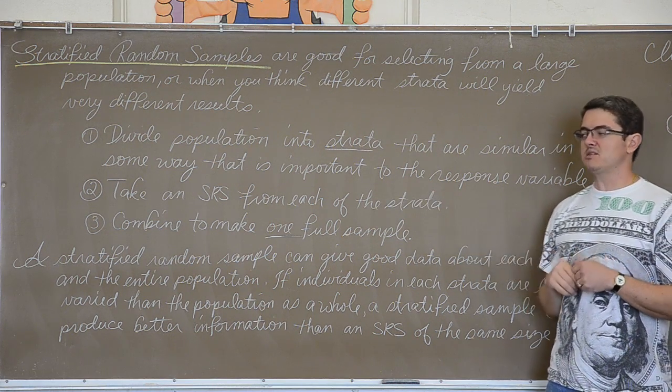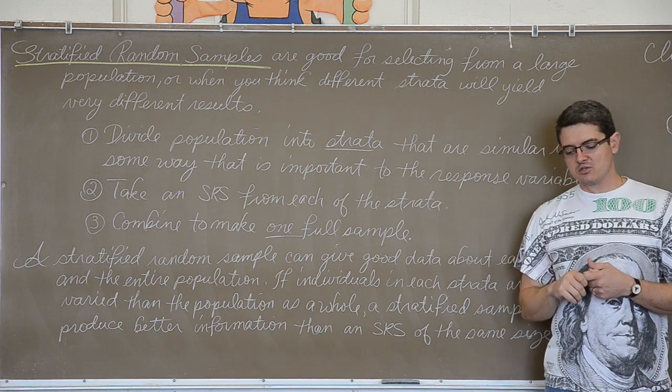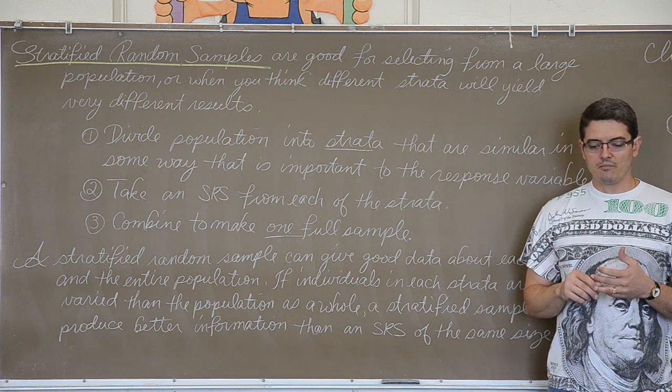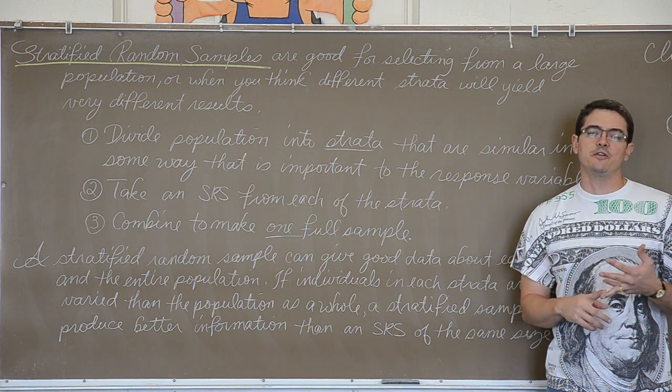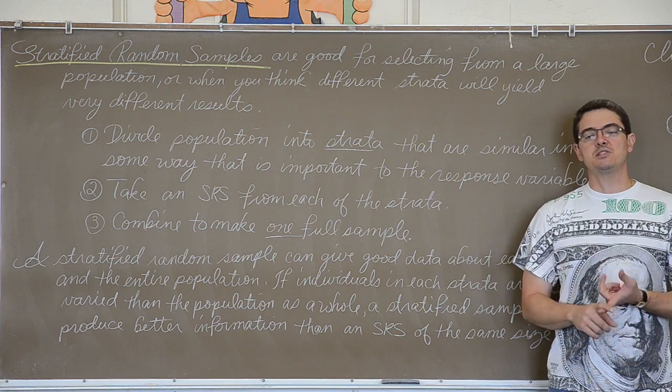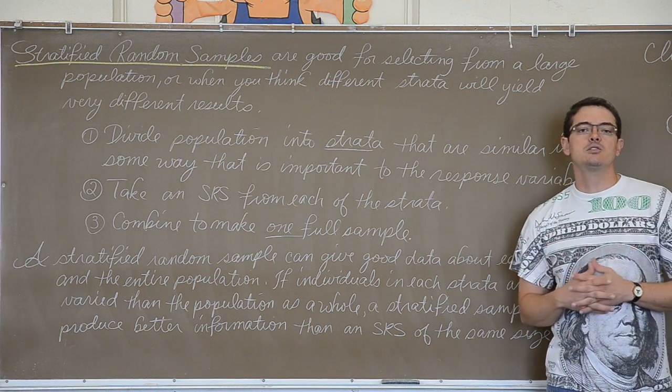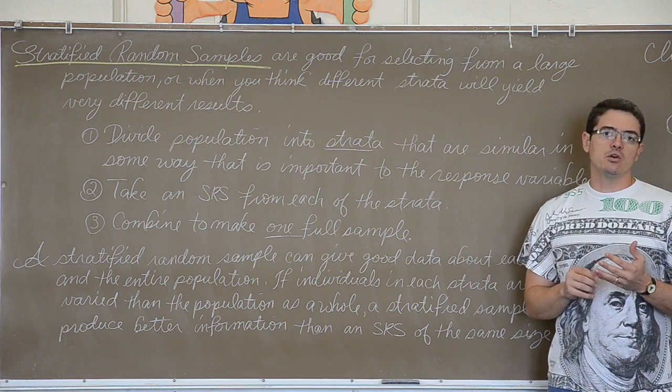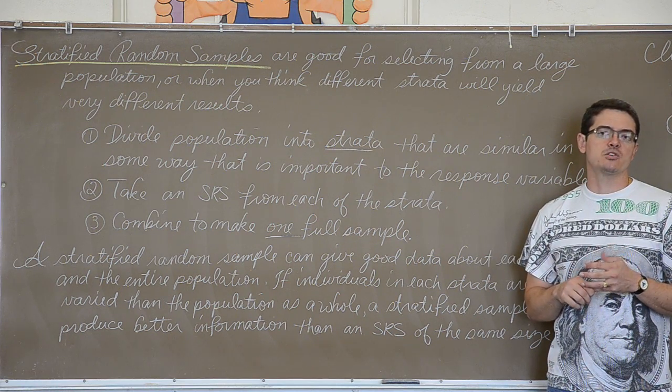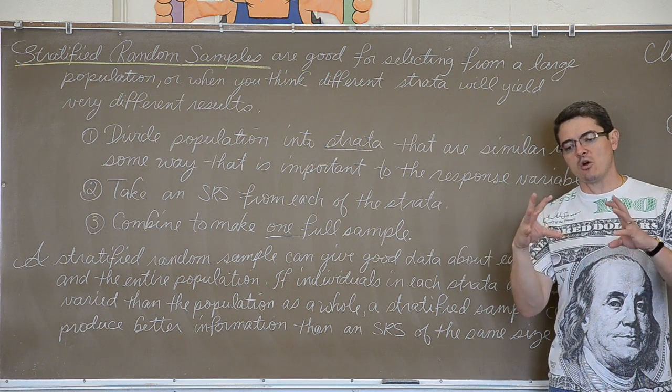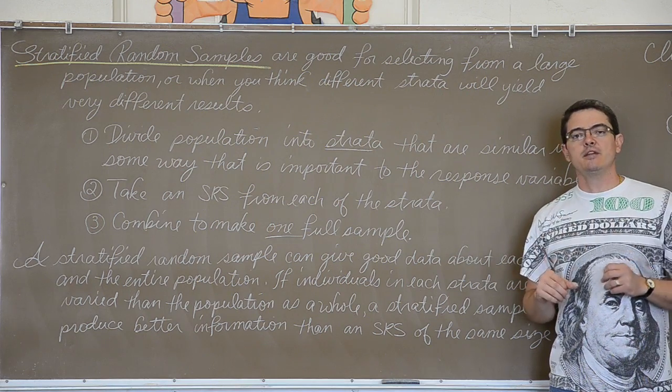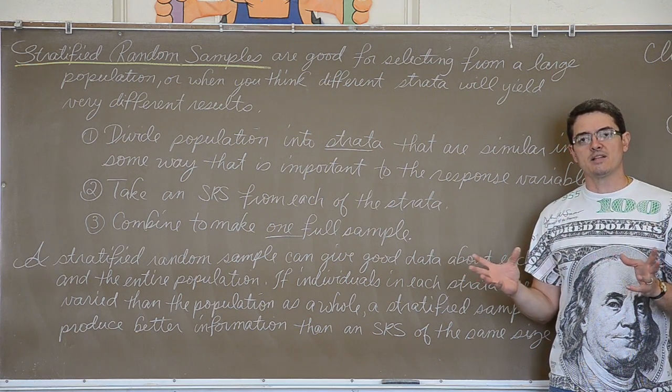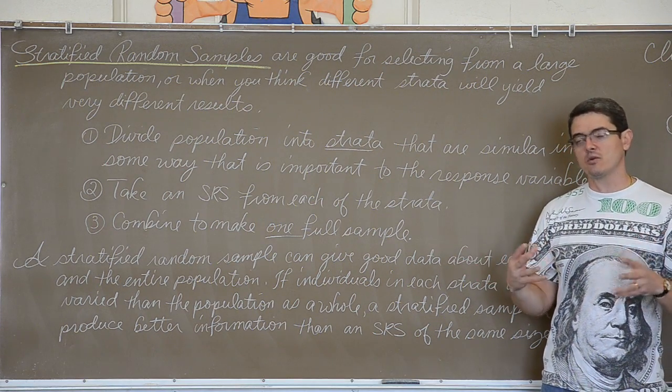And then, the second step would be to take an SRS of each strata. So maybe I choose 50 freshmen, 50 sophomores, 50 juniors, and 50 seniors to get an even weight to all the classes. Well, if I do that, then the seniors will have a more likely chance of being chosen because I am taking 50 out of a smaller pool of students than if it were talking about the freshman class. Because that freshman class is larger, unfortunately, people drop out or they don't graduate or they just move away.